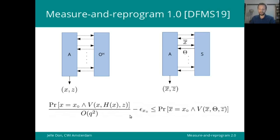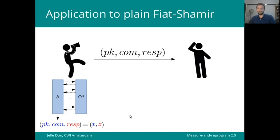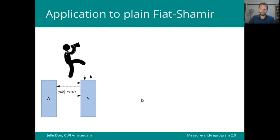Now I'll show you how to apply this tool in a reduction for the plain Fiat-Shamir transformation. What we want to do in the reduction is turn a prover against the non-interactive Fiat-Shamir scheme into a prover for the interactive scheme to show that both are approximately equally hard to break. The pattern can be matched as follows. We know that the adversary will output a public key, a commitment and a response. So the public key and the commitment take the role of x and the response takes the role of z.